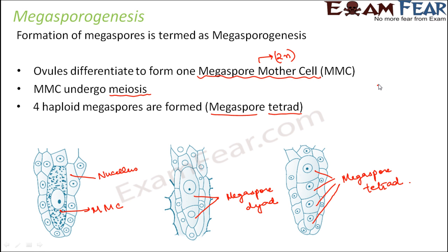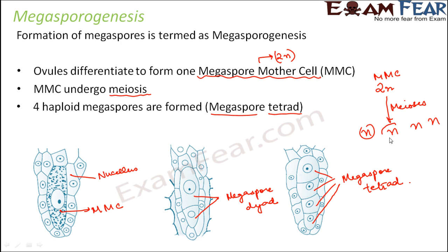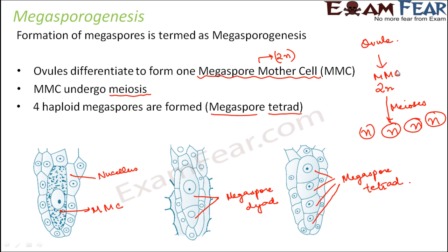So megaspore meiosis has taken place: the megaspore mother cell, which was diploid, underwent meiosis and then four haploid cells were formed. These four haploid cells form the megaspore tetrad. The megaspore mother cell was itself formed from the ovule, which differentiated — the ovule was also diploid and differentiated to form the megaspore mother cell.